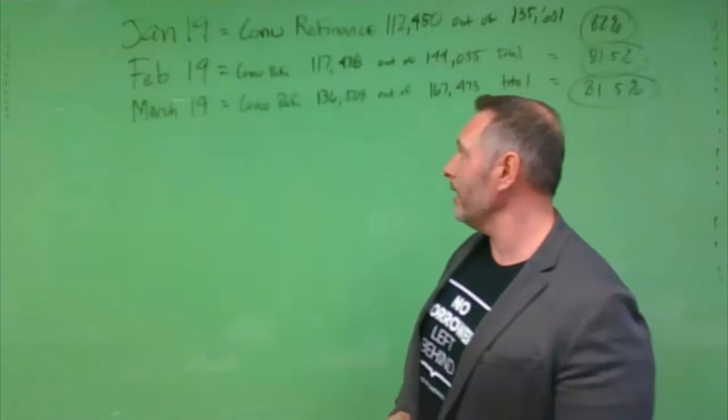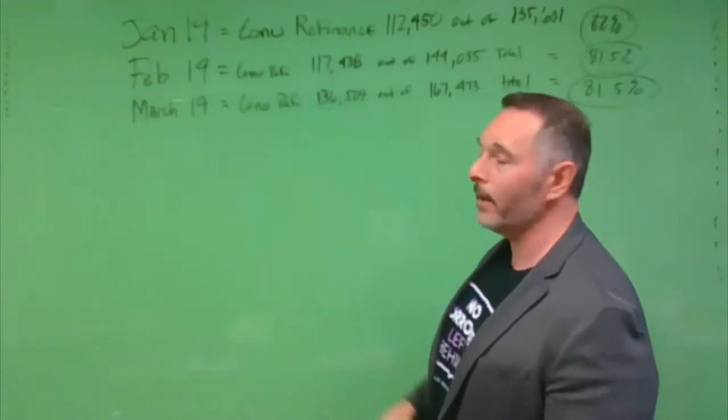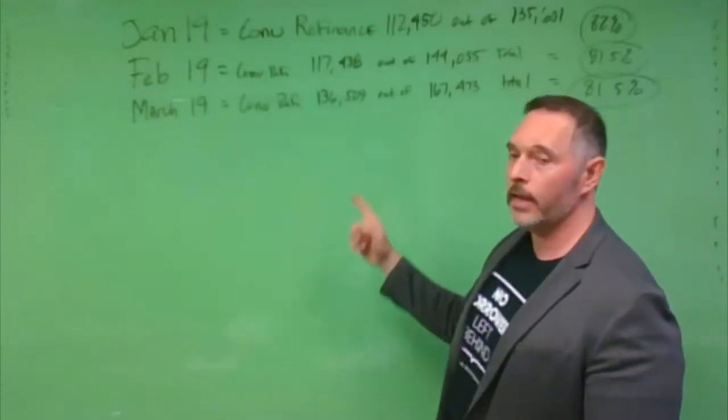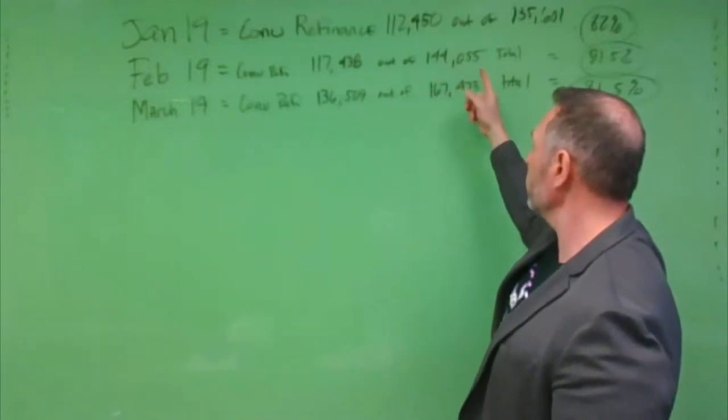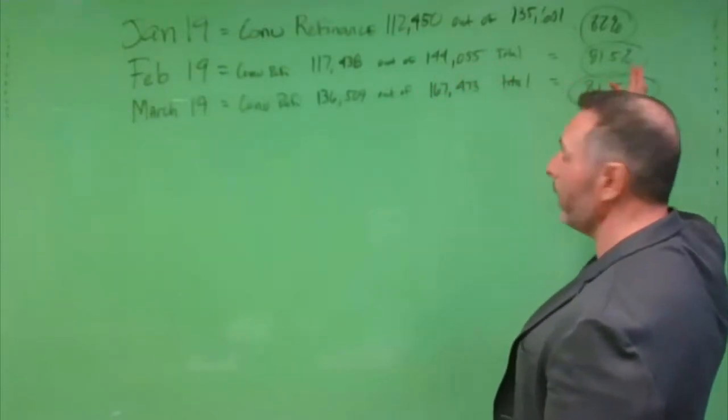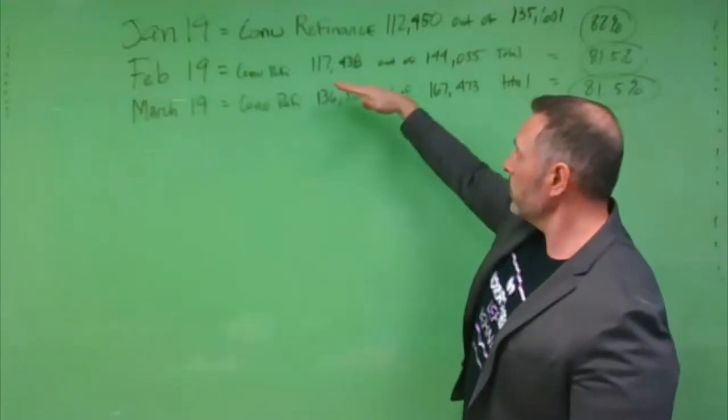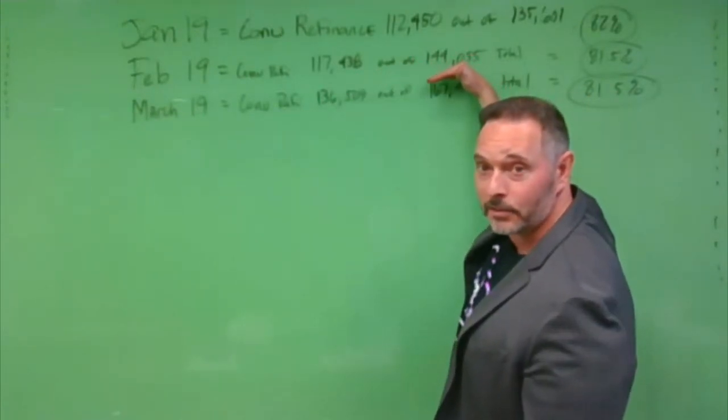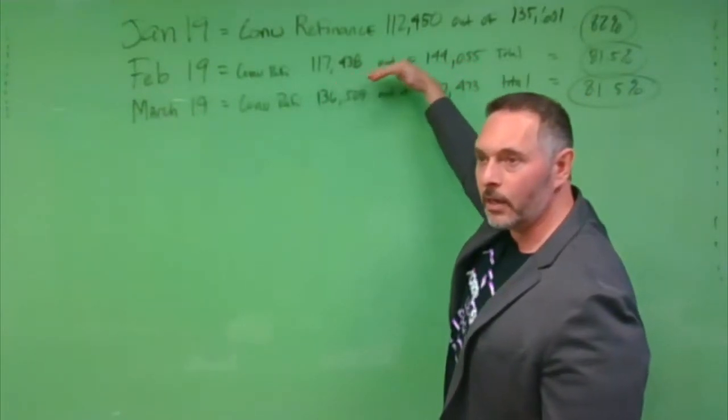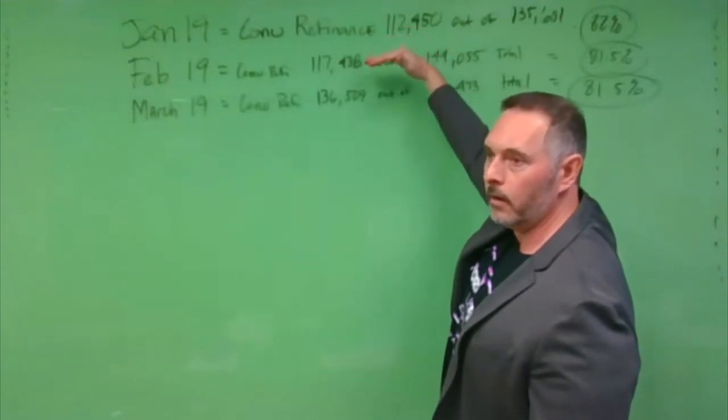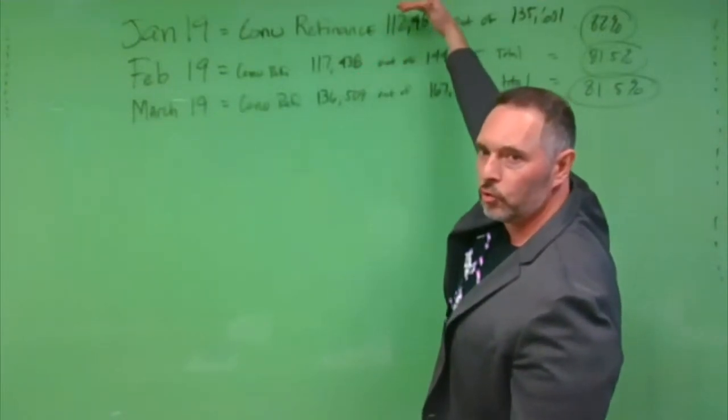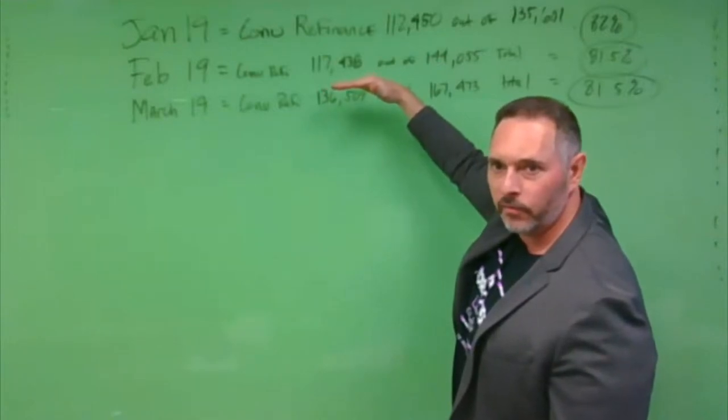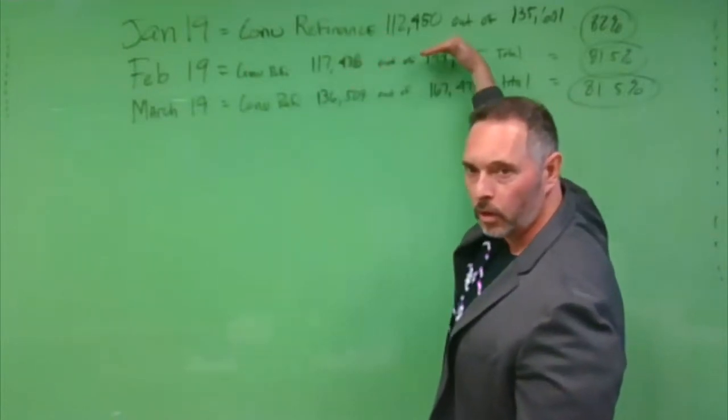In February of 2019, conventional refis went up to 117,438 out of 144,055, a total of 81.5%. You see, the market rose in both cases. So there's this preconception that when rates are down, the government market shoots way up and the conventional market doesn't move. The truth of the matter is it moves along with it.